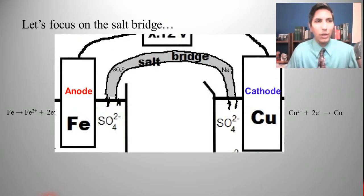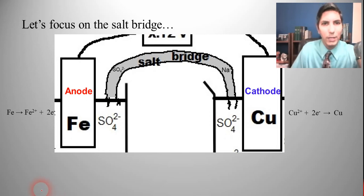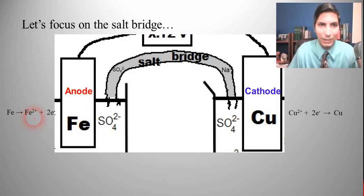Now, let's focus on the salt bridge here for a moment. So if we take a look at the reaction here, if we focus on the anode, we just said that there is oxidation taking place at the anode. And so that means that the iron atoms in this anode are actually being dissolved, or I guess we could say turned into iron 2+ ions when those electrons are lost.